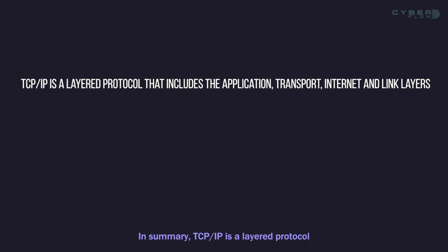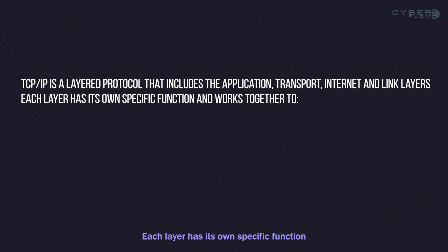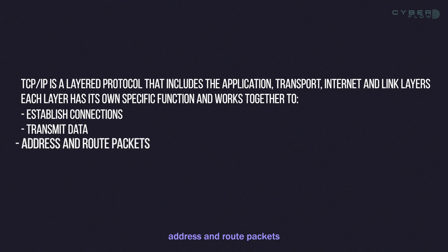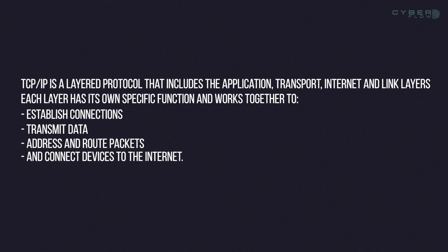In summary, TCP/IP is a layered protocol that includes the application, transport, internet, and link layers. Each layer has its own specific function and works together to establish connections, transmit data, address and route packets, and connect devices to the internet. Understanding how these layers and protocols work is essential for anyone working in the field of networking.